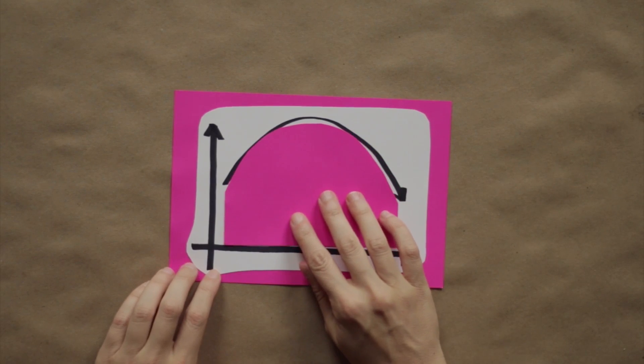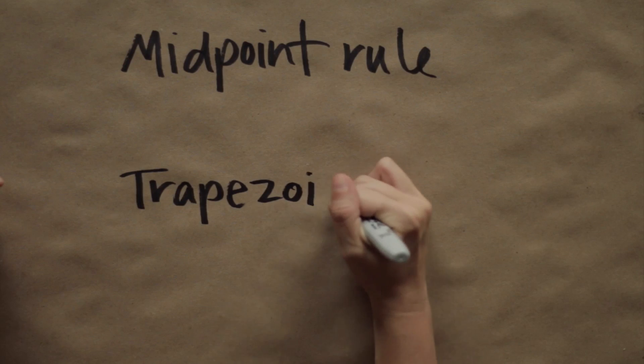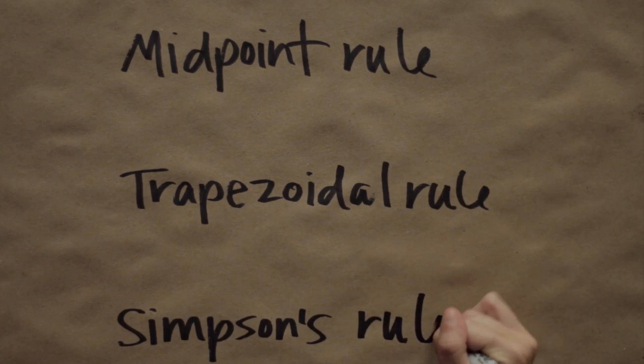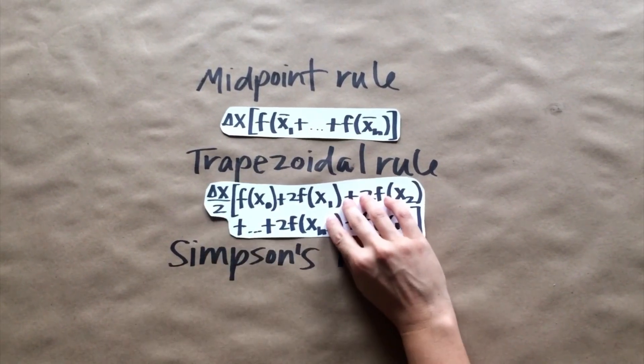When we first study integrals and we learn different rules for approximating the area under the curve, like midpoint rule, trapezoidal rule, and Simpson's rule, we usually spend a lot of time talking about how accurate they are.